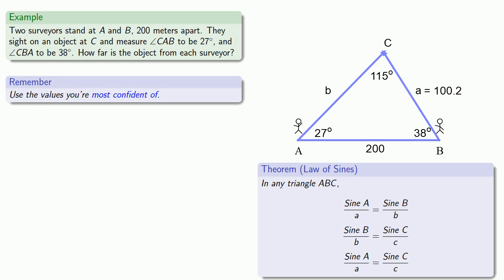What does that mean? Well, the angles 27 and 38 were given, and so we have to assume that these values are correct. If they're not correct, there's nothing we can do about it. Likewise, this length, 200 meters, we also have to assume is correct because if it isn't correct, we can't solve the problem. And so that means these angles A and B and this length c are all values we should be pretty confident of.